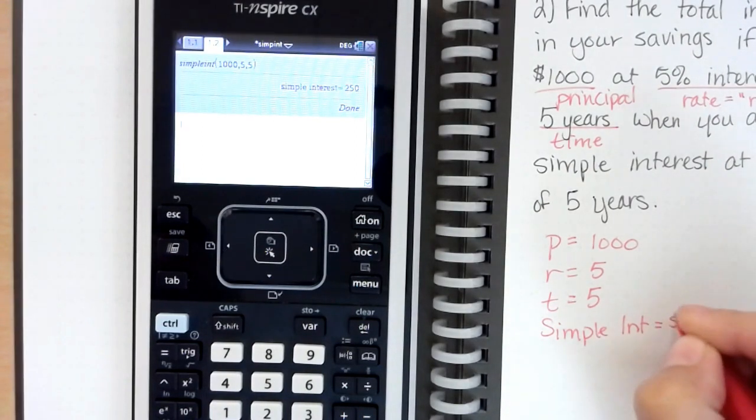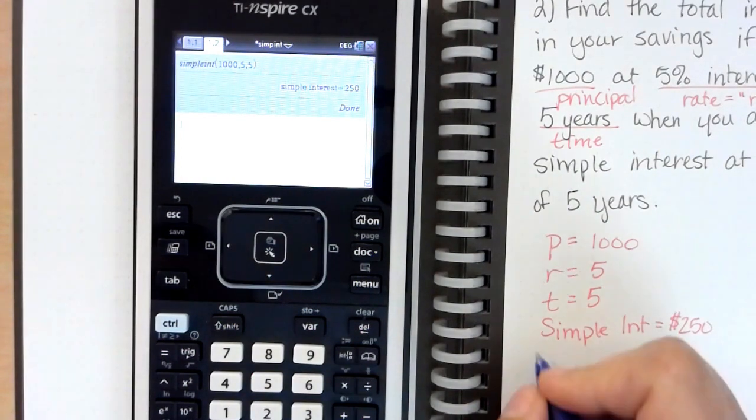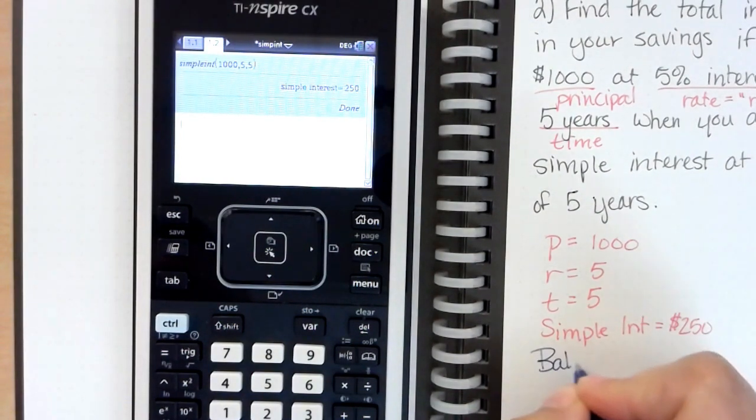So on compound interest it gave us our grand total. On simple interest it only gives us our interest earned, so our grand balance at the end of the five years will be our principal plus our simple interest.